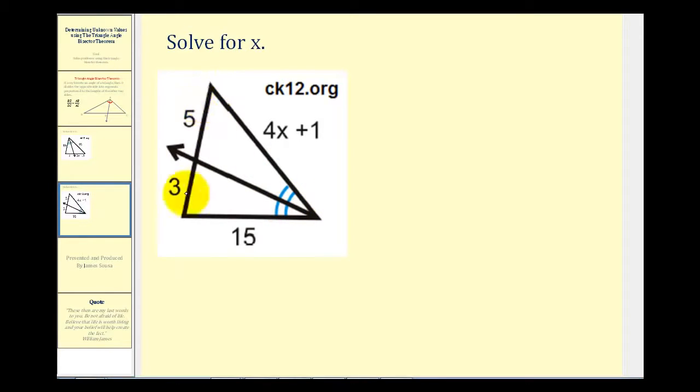So it divides this opposite side so that it's proportional to the other two sides of the triangle. So in order to solve for X our proportion would be 5 is to 3 as 4X plus 1 is to 15.